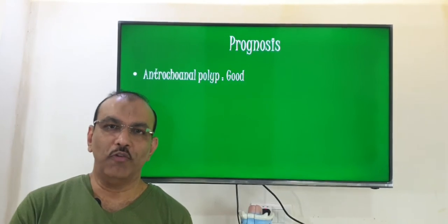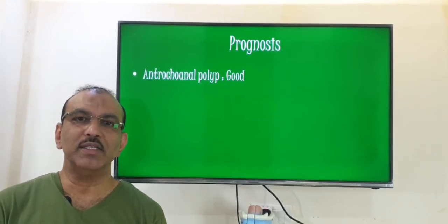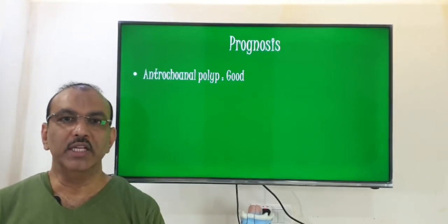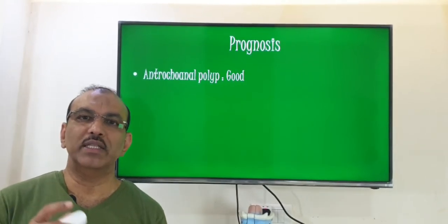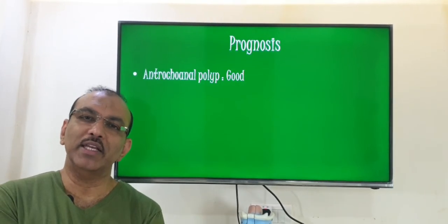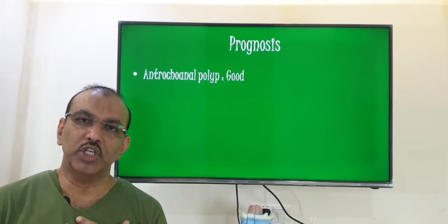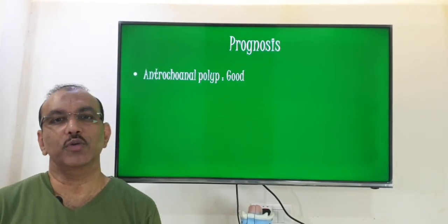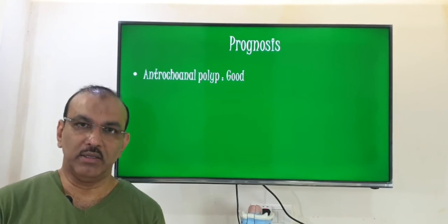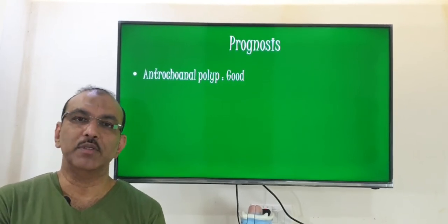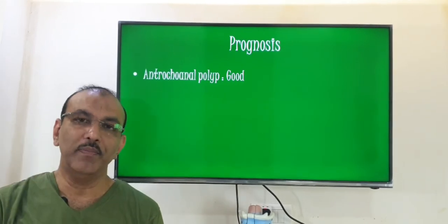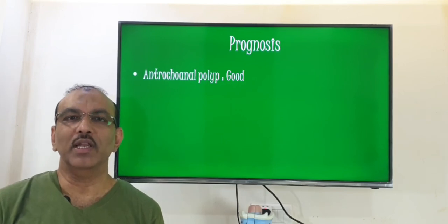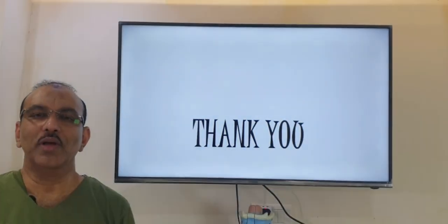The reason this question comes up often is that patients may have heard from relatives or friends about a polyp which comes back again and again. But that polyp is different — it is usually seen in the age group above 30, and those patients will have a history of allergy, bronchial asthma, and recurrent sinus infection. That condition can recur and may need two or three operations. But if the diagnosis is antrochoanal polyp and the operation has been done well, the recurrence rate is very, very less. This is all about antrochoanal polyp. Thank you so much.